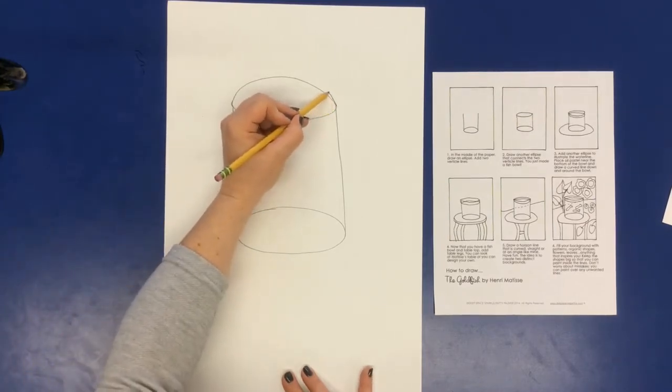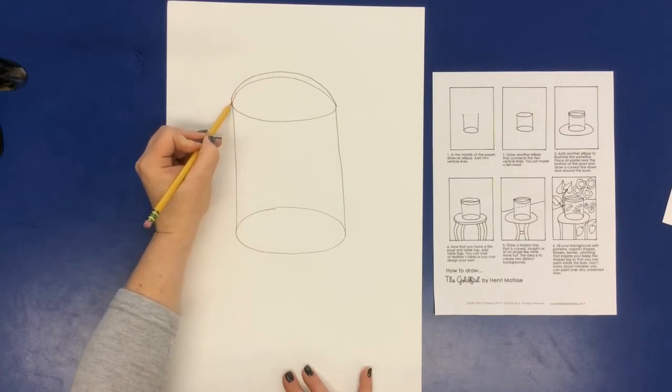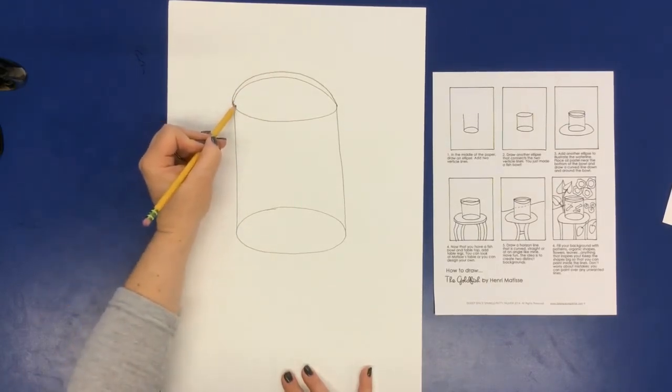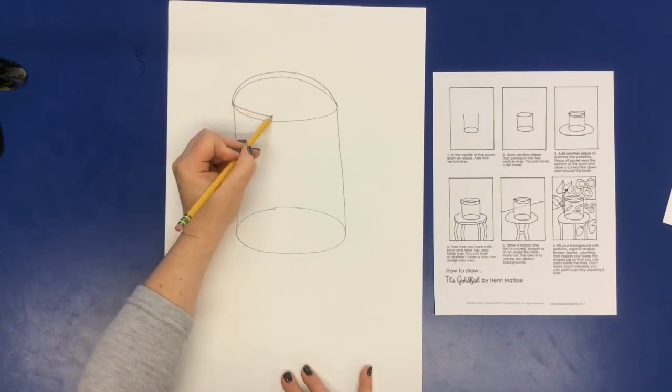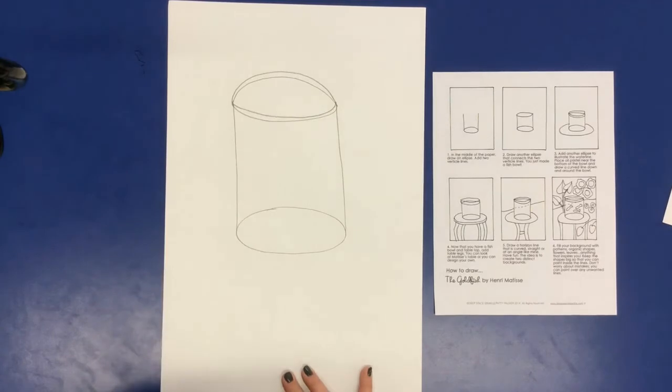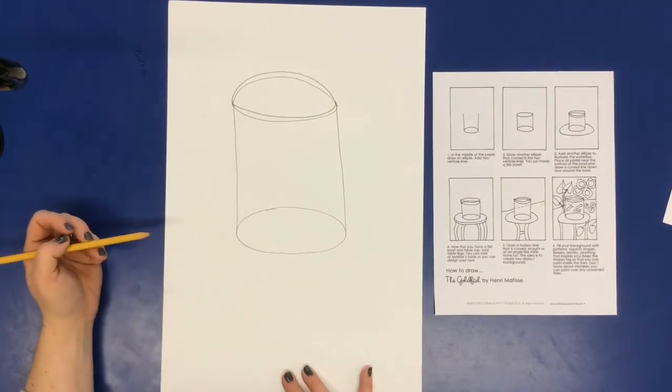And then we're going to do another rainbow on top and connect it with an upside down rainbow. That's going to help us have our water level, what looks like water in there.